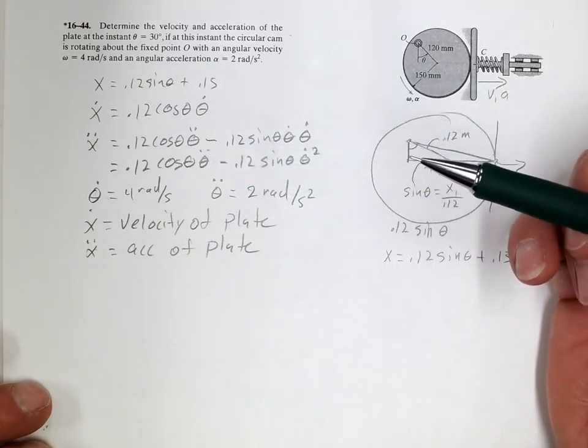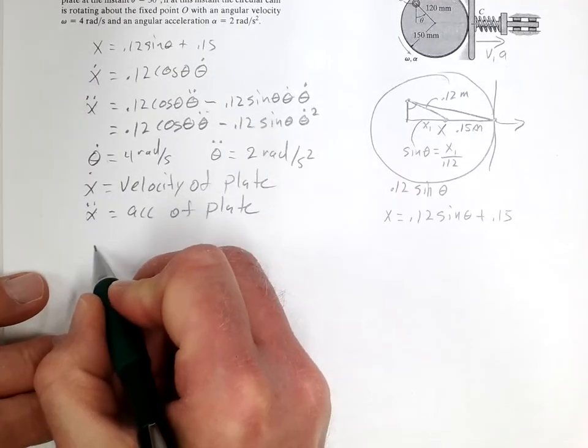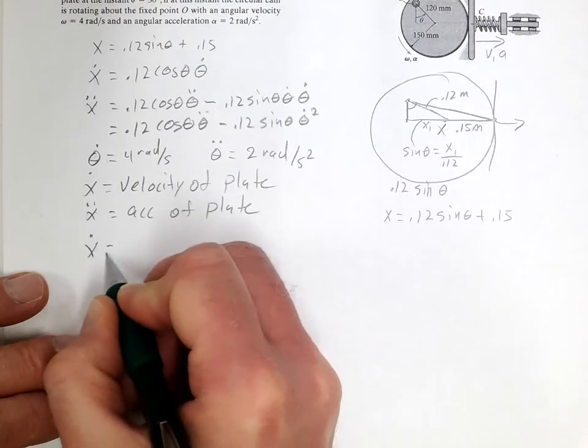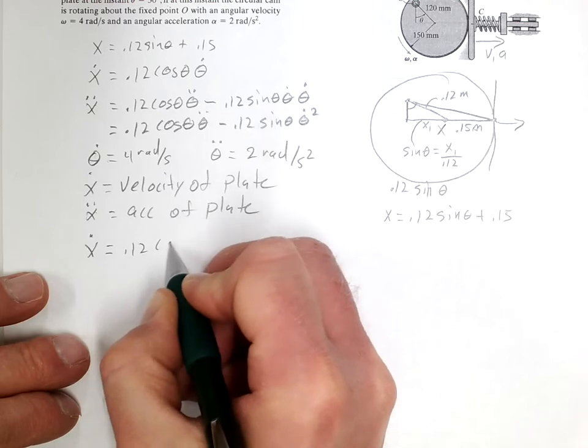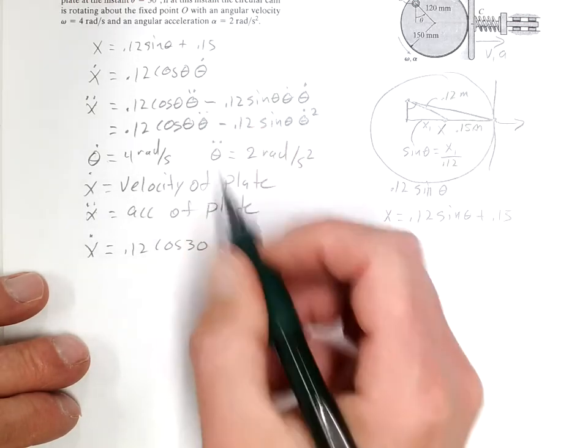And we'll get the velocity and the acceleration. So X dot equals 0.12 cosine of 30 times 4. And that equals 0.416 meters per second.